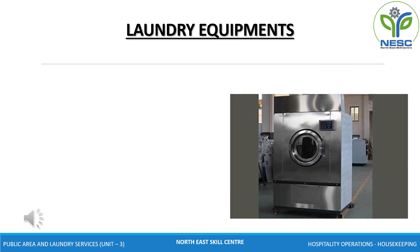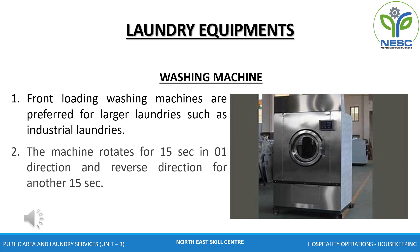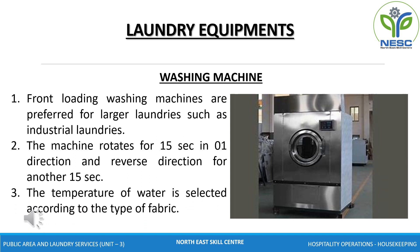Now let's go through the laundry equipments in detail. First is washing machine. Front loading washing machines are preferred for larger laundries such as industrial laundries. The machine rotates for 15 seconds in one direction and reverse direction for another 15 seconds. This prevents the entangling of linen inside the drum. The speed of rotation of the drum ranges between 40 to 60 RPM — revolution per minute. The temperature of water is selected according to the type of fabric. For example, cotton fabric can be washed at a higher temperature whereas woolen, silk and synthetic require lower temperature. The industrial machinery have a control panel which displays the stages in the wash cycle in progress, the time remaining for the completion of the cycle, the temperature of the water and even the chemicals used.